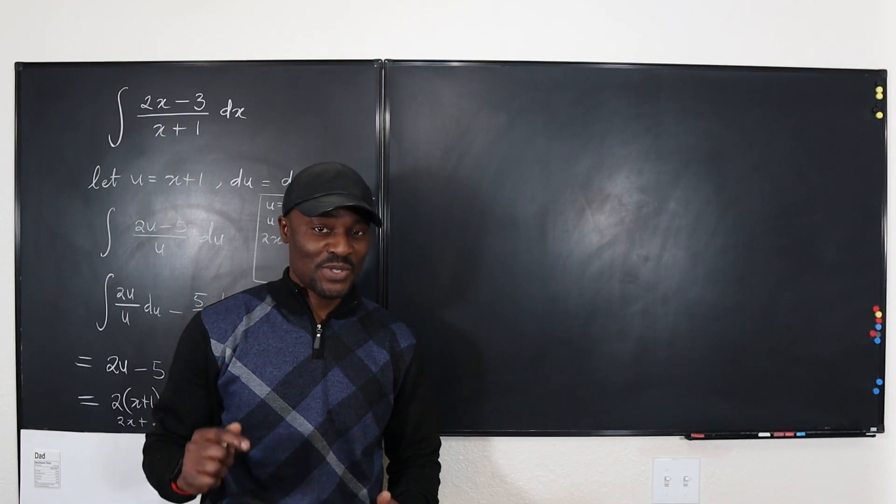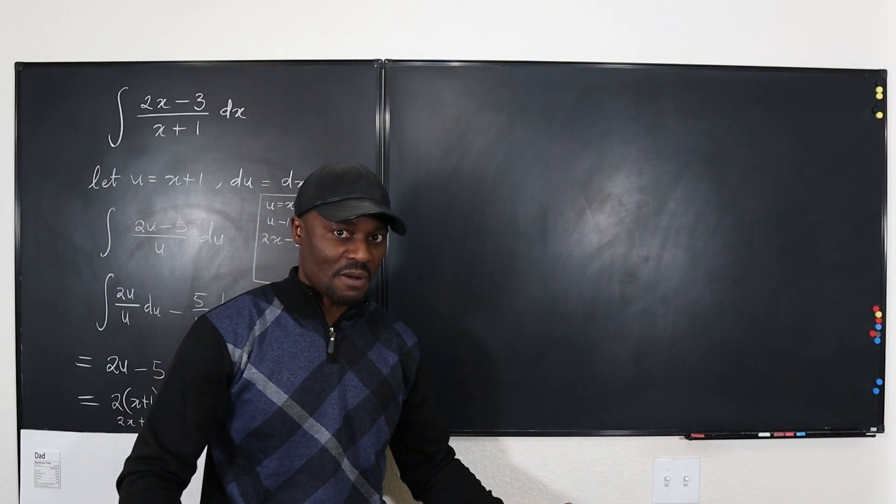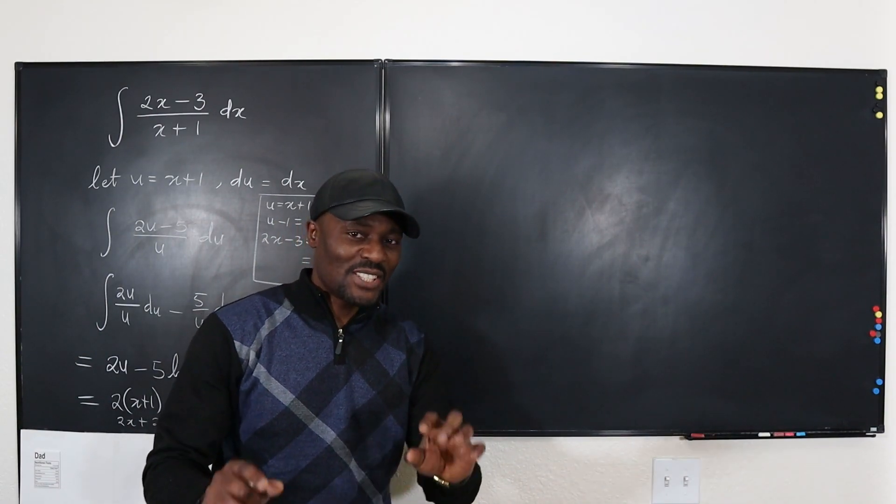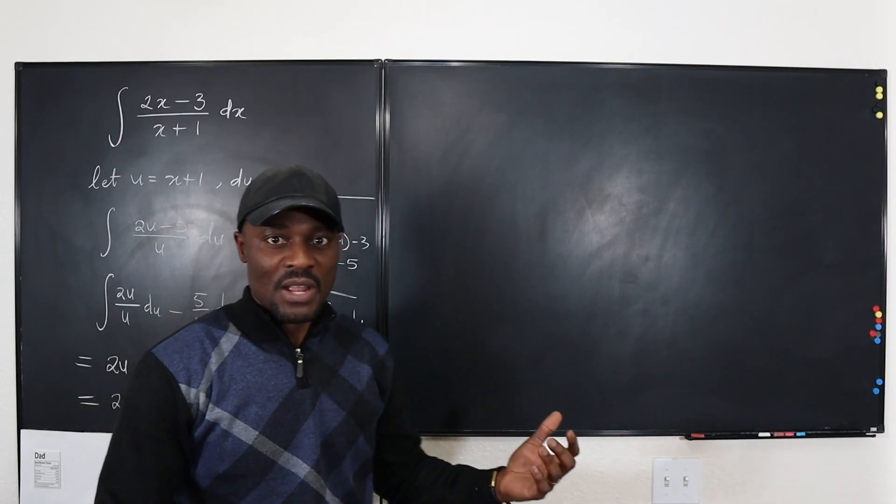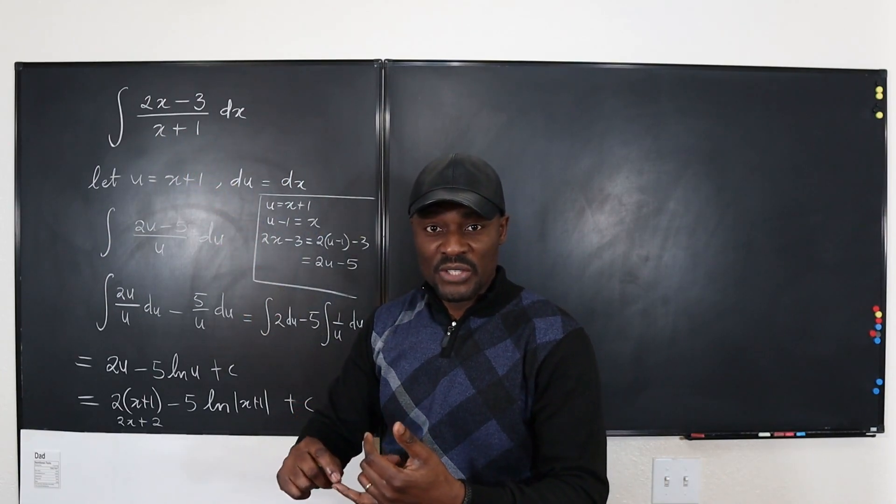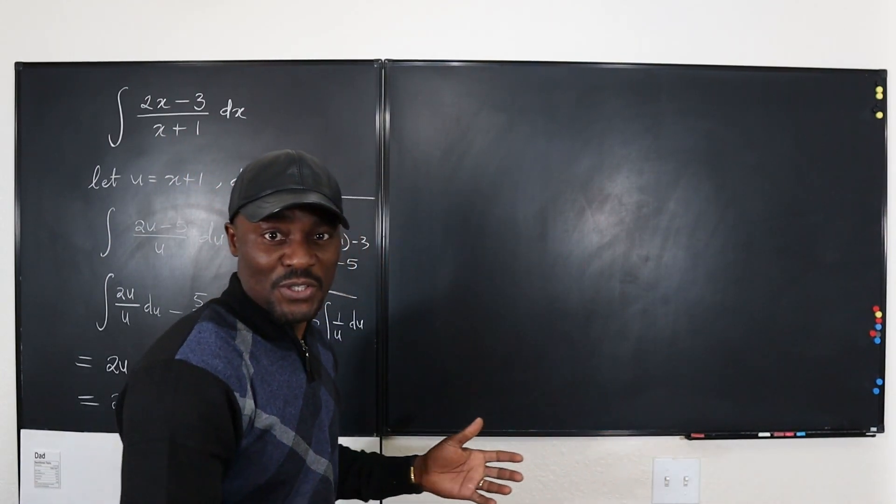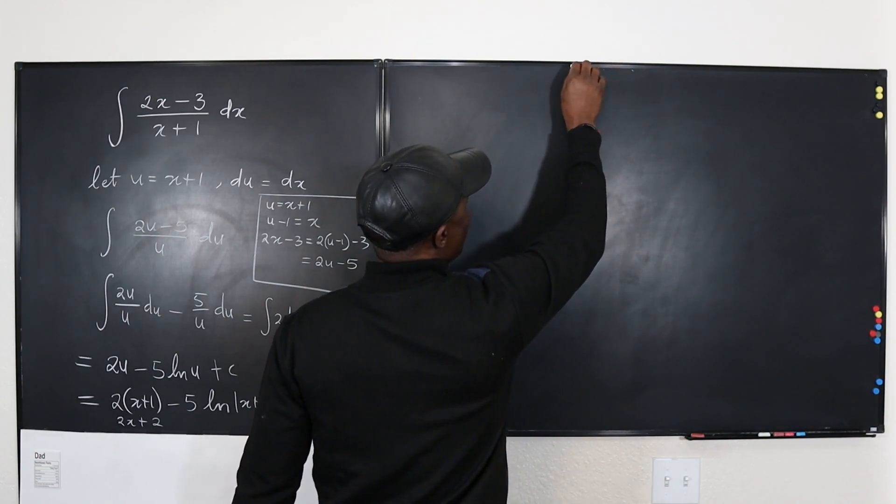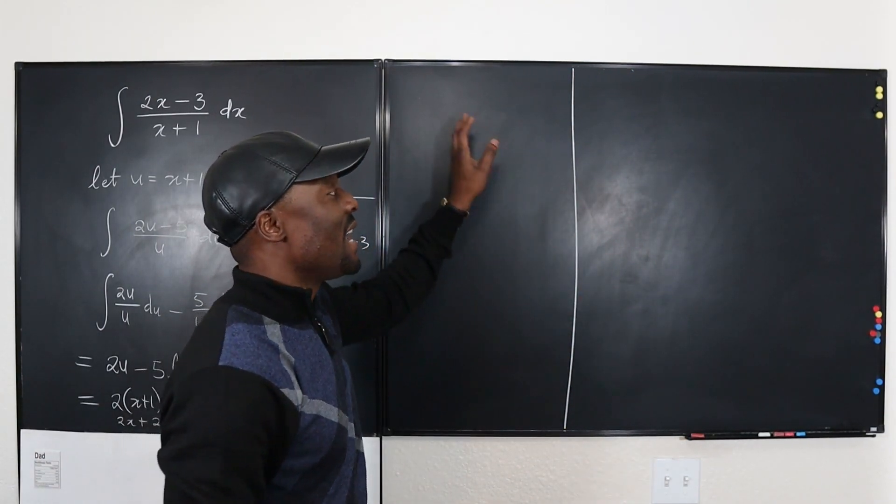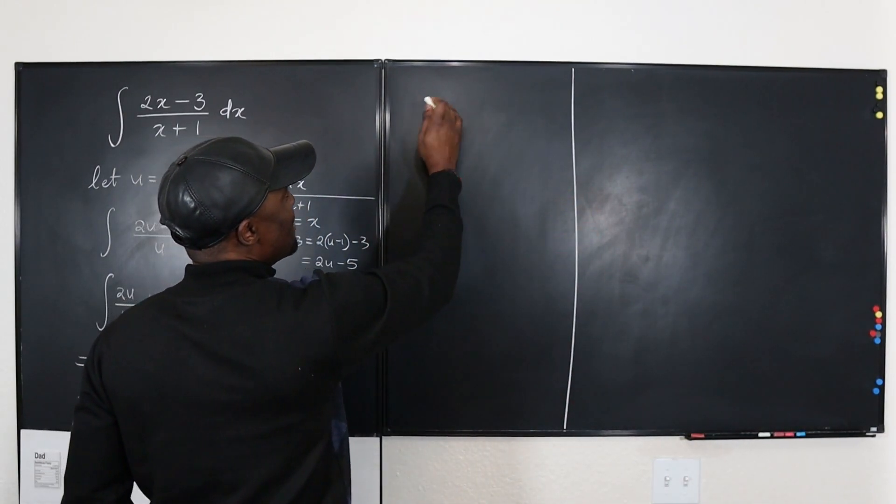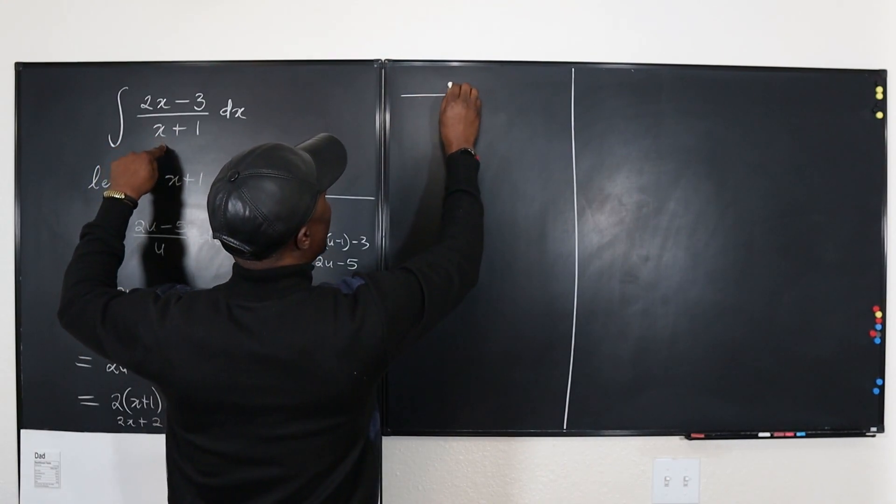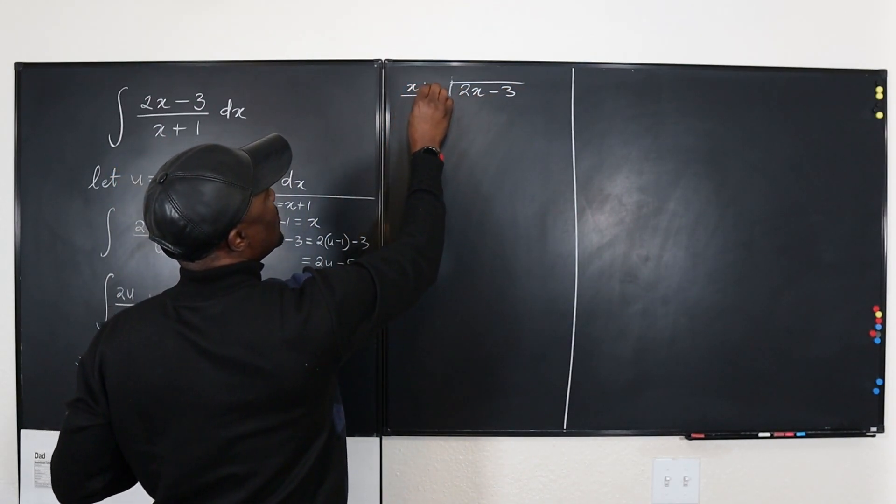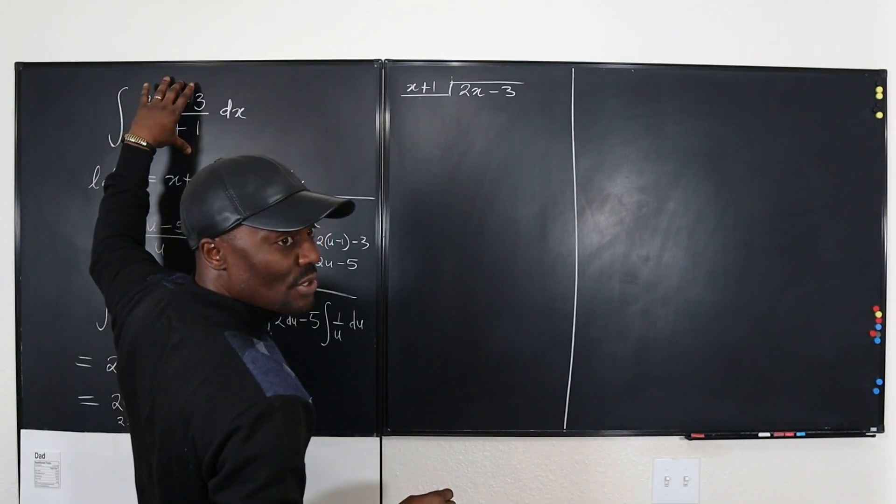Remember I said that you could do this using U substitution or partial fraction decomposition or integration by parts. Let's see if I can just show you how to do that quickly. Let's try and decompose this expression. Remember that you could break this down using long division or synthetic division. I have my own weird way of doing it, but I'm just going to use the easy method. We're just going to divide this using long division.